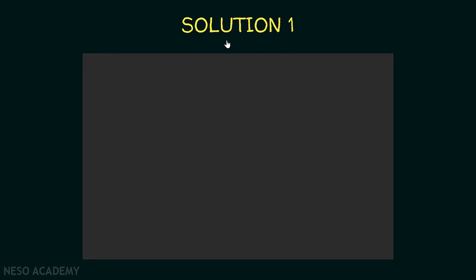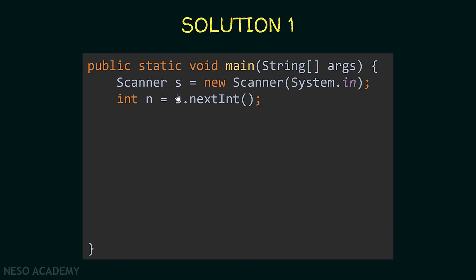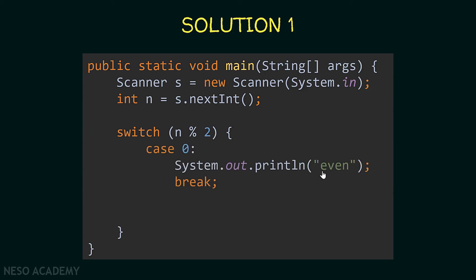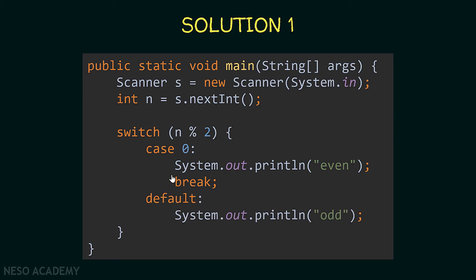So this is our first solution. In our main method I'm creating a scanner object and reading the number from the user, storing it inside a variable n. In order to find if n is even or odd, I need to get the remainder of the division of n by 2. So we are going to switch the value of n modulo 2. If n modulo 2 is equal to 0, then n is an even number — I'm printing 'even' and then breaking out of the switch statement. For the default case, if case 0 was not executed, this means n is an odd number, so I'm printing 'odd'.